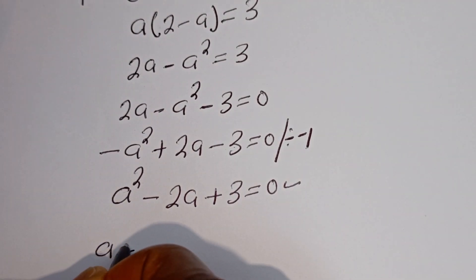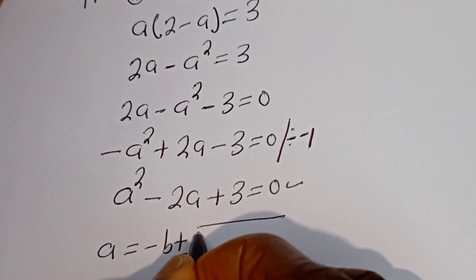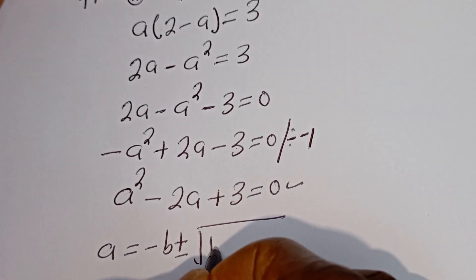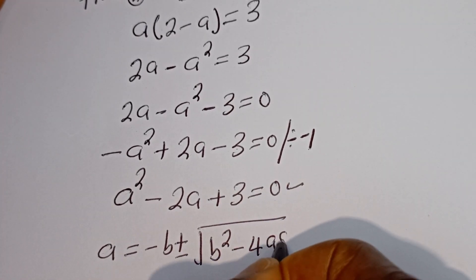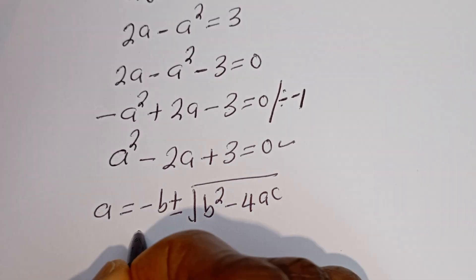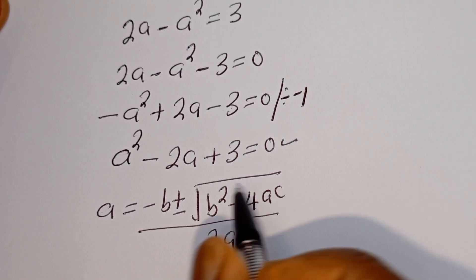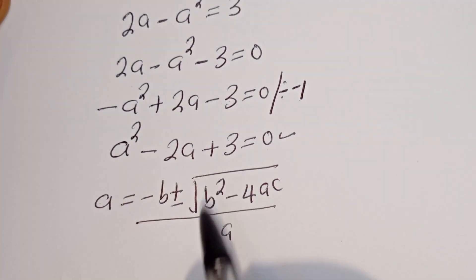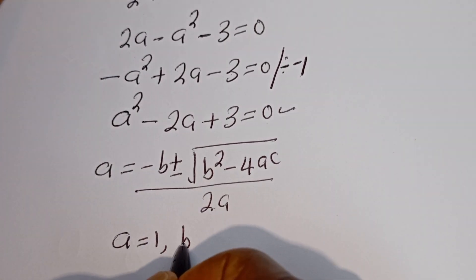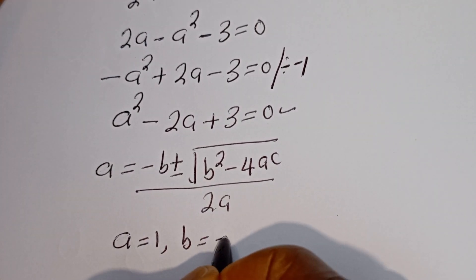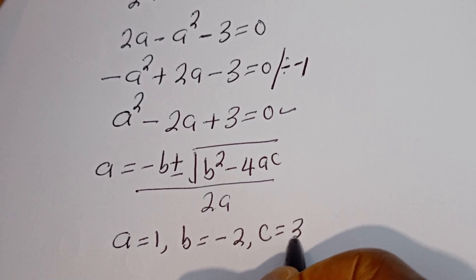A is equal to minus B plus or minus square root of B squared minus 4AC, all over 2A. From this equation, A is equal to 1, B is equal to minus 2, and C is equal to 3.